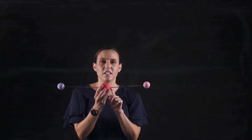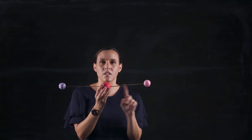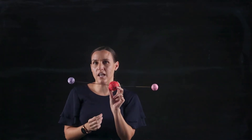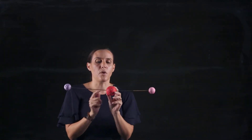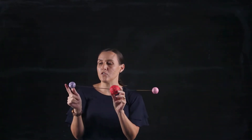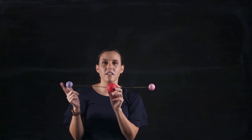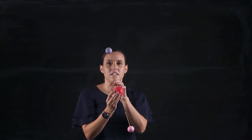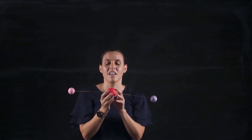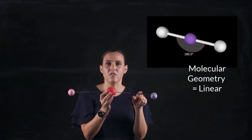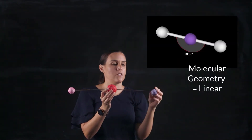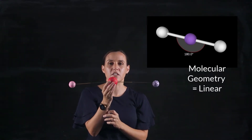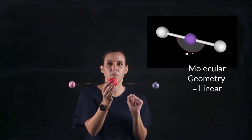I've got some polystyrene balls and some sticks between them to use for the model today. We've got our central atom with two atoms on either side. The way they would arrange themselves would be to maximize the distance between the two atoms, so they would be 180 degrees away from each other. This shape would be labeled a linear shape — it's got a linear arrangement.